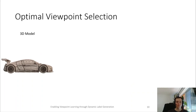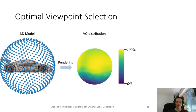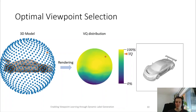For this, we have to consider many different views of the same model. Then we have to render the model from each of these viewpoints to compute the viewpoint quality metric for each of the views. With the sampled view quality distribution, we are now able to rank the views of the model and determine which views are good in the given metric.